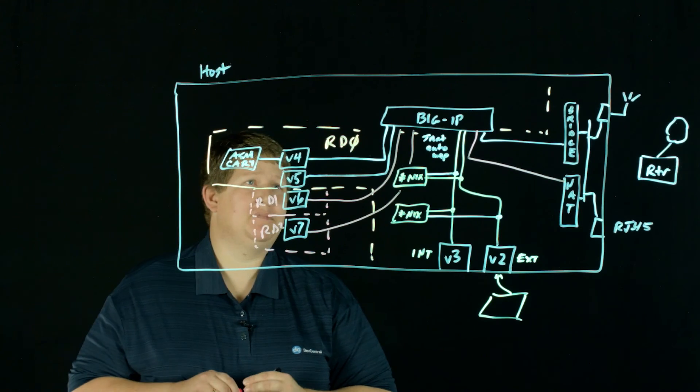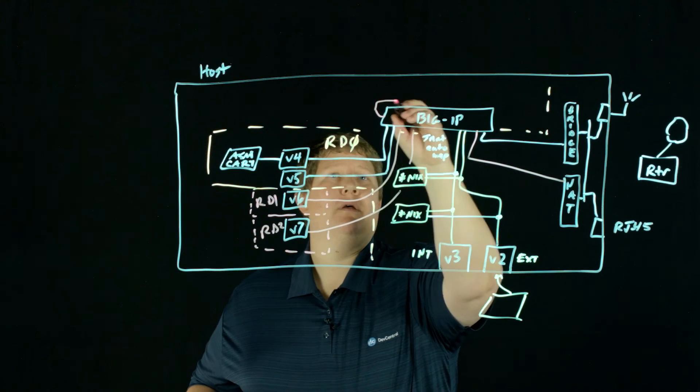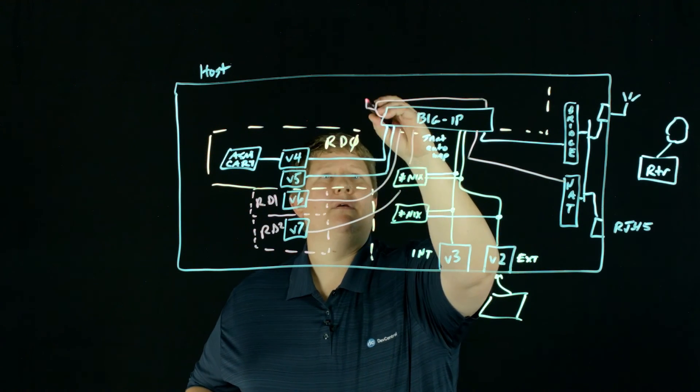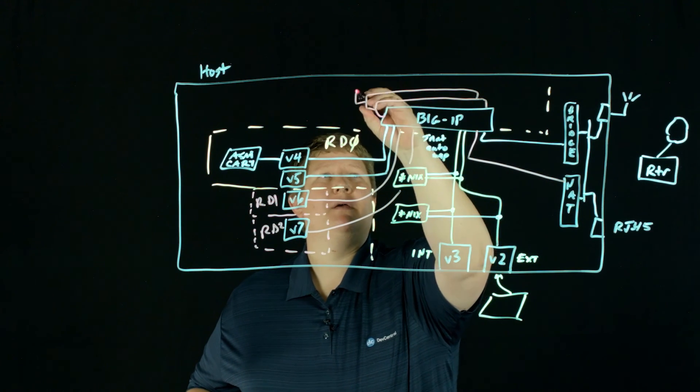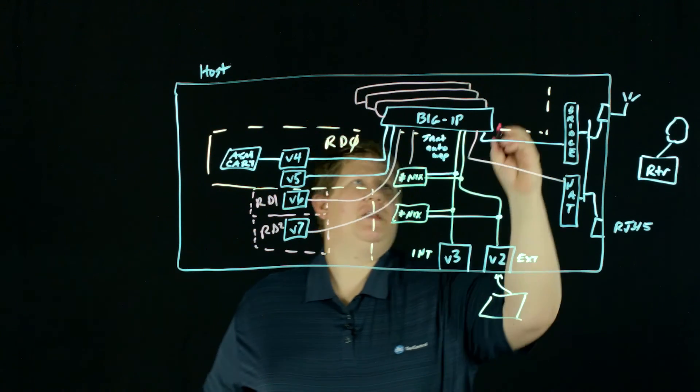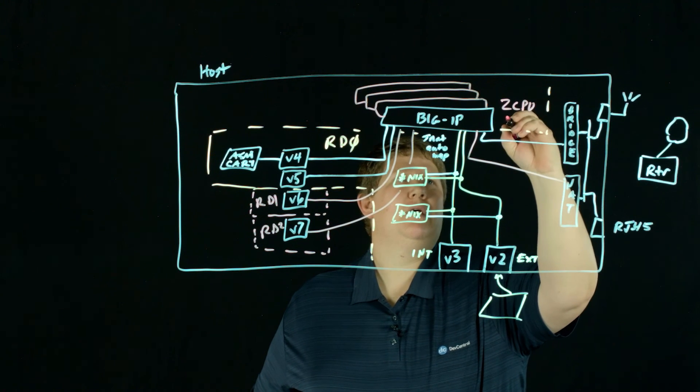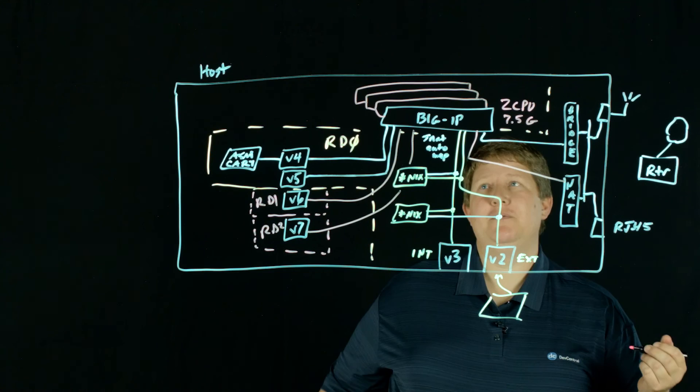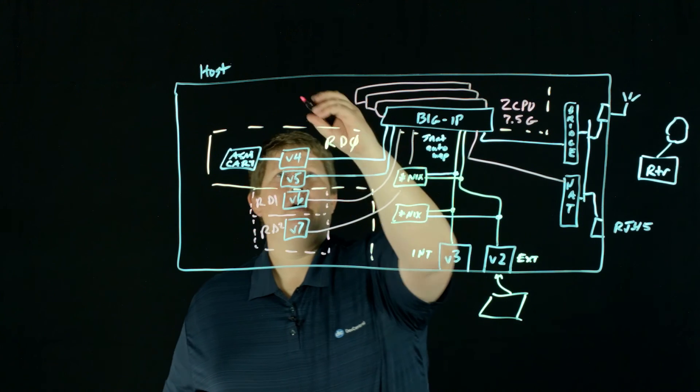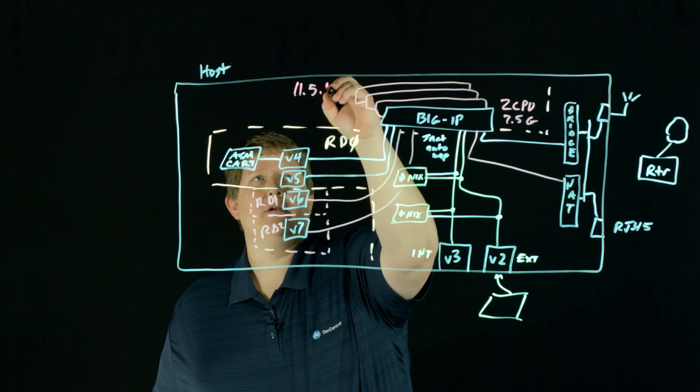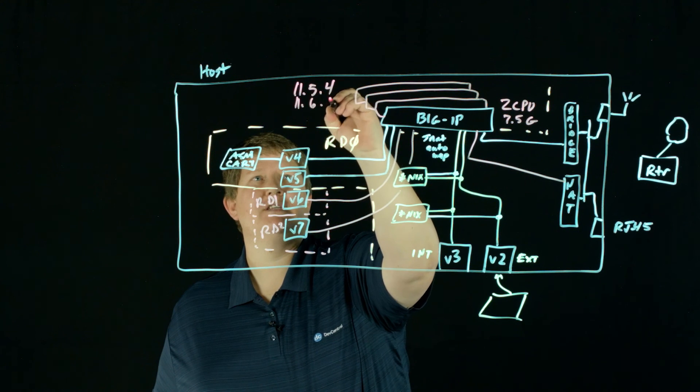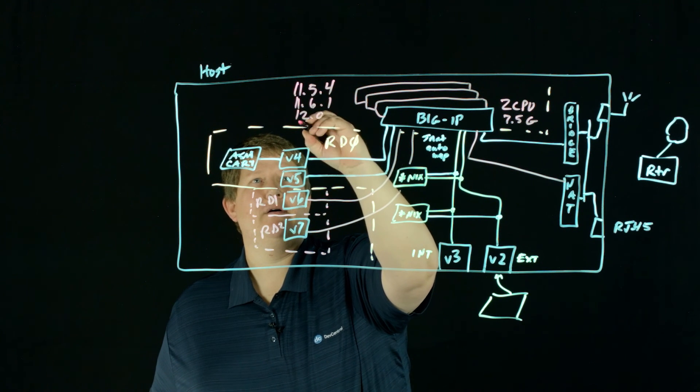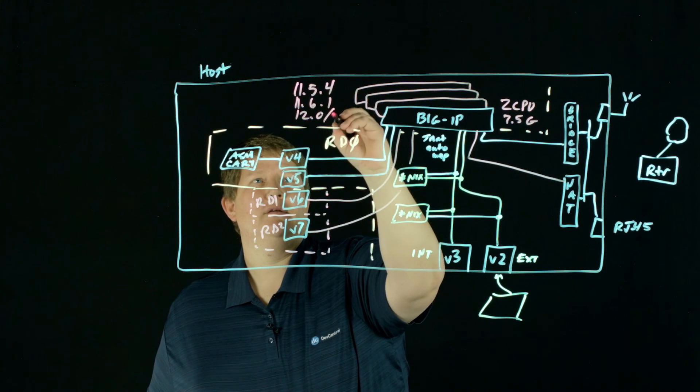The big IPs themselves, I actually have four of them. I don't run them all at the same time because I only have so much memory on my Mac, but each one is two CPU and I put seven and a half gig on it so that I can run all modules if I need to. But I also have the different versions I run: 11.54, 11.61, 12.0, and 12.1.